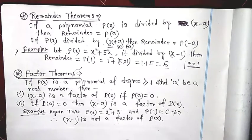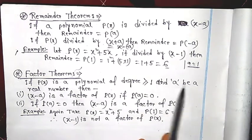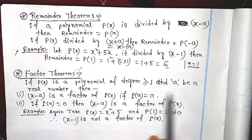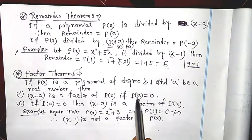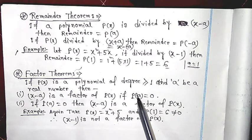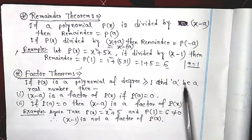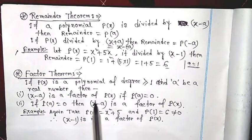The next theorem is the Factor Theorem. Without any division, we can find a factor of a polynomial. Statement: if p(x) is a polynomial of degree greater than or equal to 1 and a is a real number, then (x − a) is a factor of p(x) if and only if p(a) = 0. Since p(a) is the remainder, if the remainder equals zero, then p(x) is completely divisible by (x − a), so (x − a) is a factor.